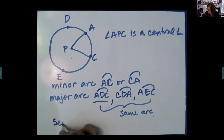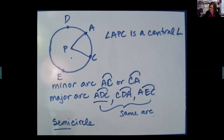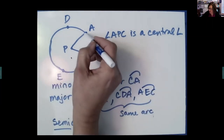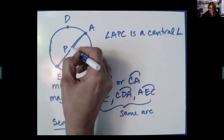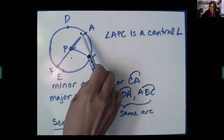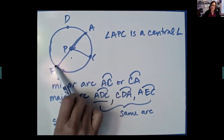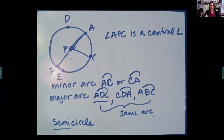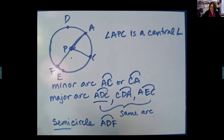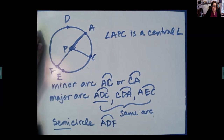One more thing: a semicircle — semi means half. To have a semicircle connected to a central angle, we need that central angle to be a straight angle, making it a diameter. So from A to F is a semicircle. To name a semicircle, you have to name three letters. Let's start at A, go through D, and land on F — that would be a semicircle. Arc ACF would also be a semicircle, but it would be a different semicircle.